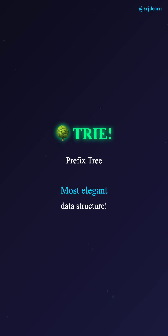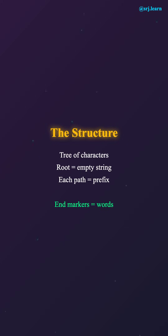This is where the trie comes in, also called a prefix tree. It's one of the most elegant data structures you'll ever see. A trie is a tree where each node represents a single character. The root represents an empty string. Each path from root to a node forms a prefix, and complete paths that end with a special marker represent full words.